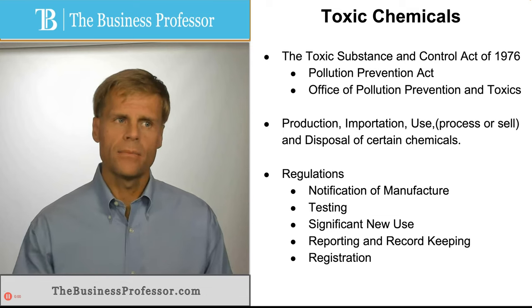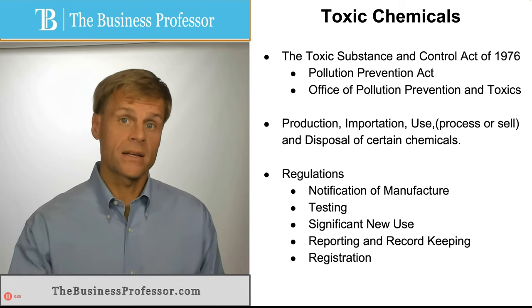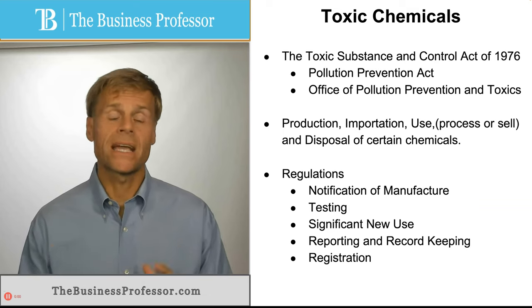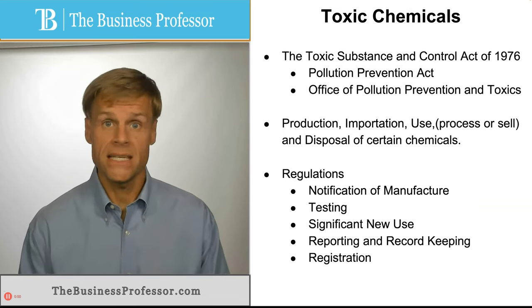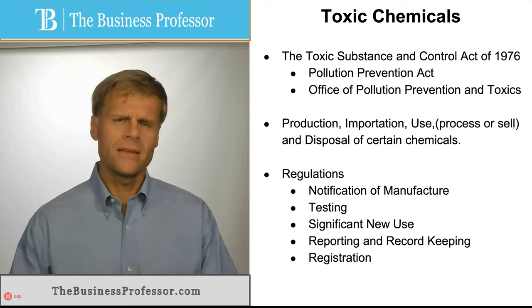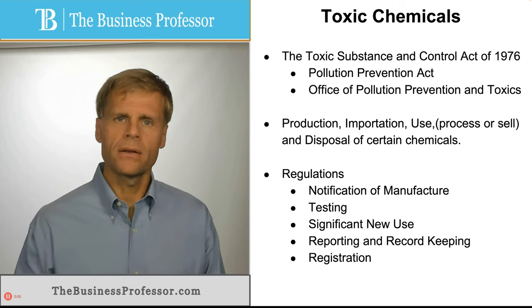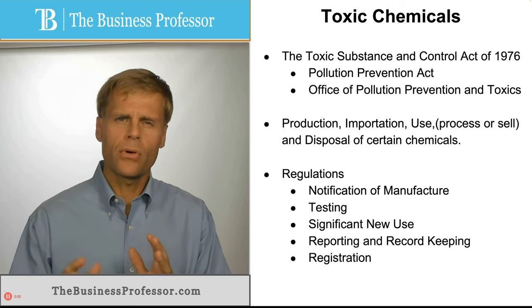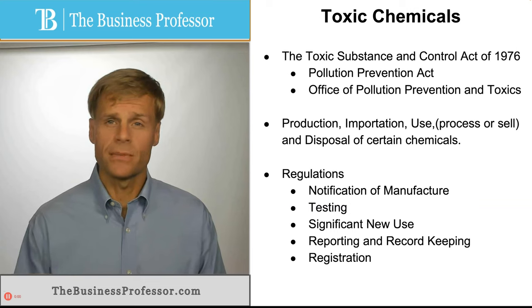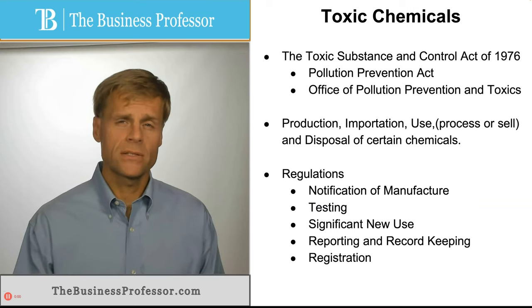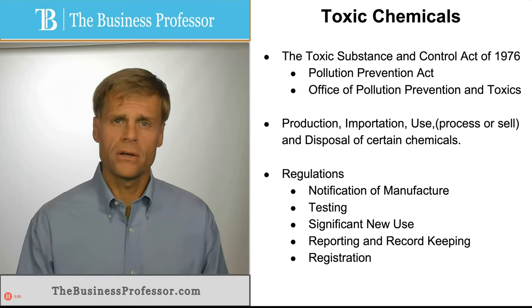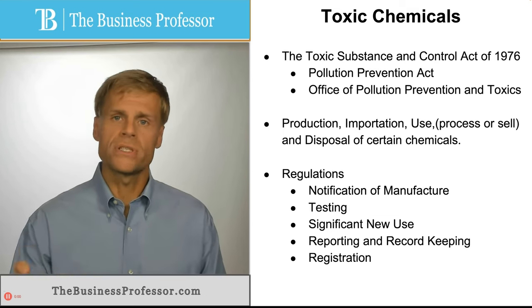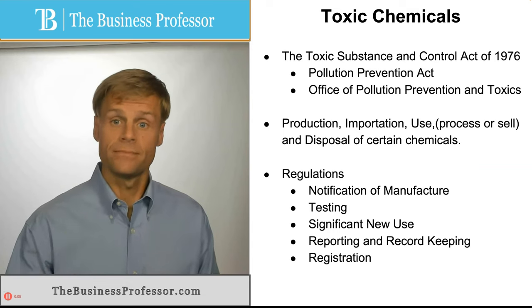The primary method of regulating toxic chemicals in the United States is pursuant to the Toxic Substance and Control Act of 1976. This act is primarily a method of regulating the process by which toxic chemicals are produced, transported, brought into the country, introduced into commerce, and how their use is recorded and documented.